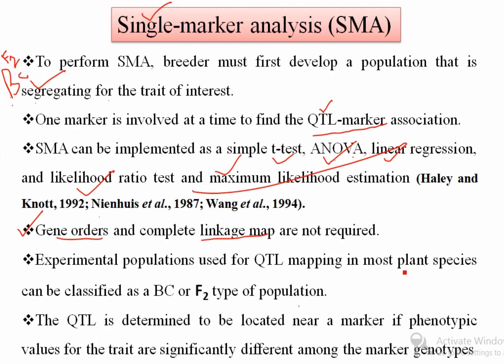The experimental population used for QTL mapping in most plant species is classified as backcross or F2 type. To perform SMA, the breeder must first develop a segregating population. The QTL is determined to be located near a marker if phenotypic values for the trait are significantly different among the marker genotypes. This point applies to all QTL detection methods.